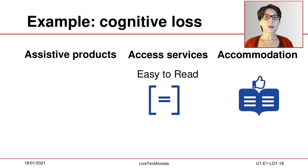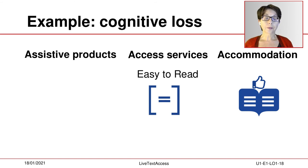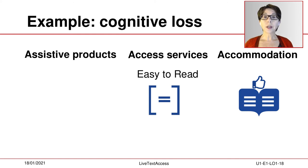An example that includes a person with cognitive loss: this person may not even use any assistive products because he or she does not have a sensory impairment. However, the same person may use the access service easy-to-read subtitles to watch a documentary film or the news. Similarly, a person with cognitive loss can request their company to provide a document in easy-to-read language when they need to read and understand its content to fulfil their duties.